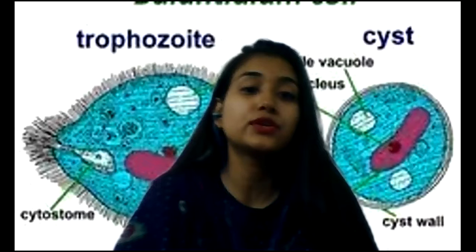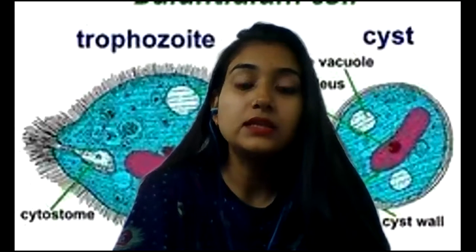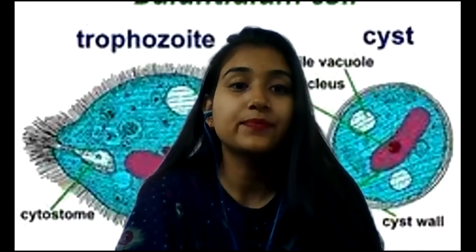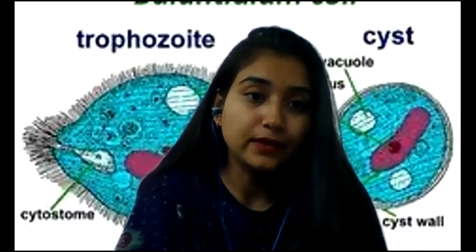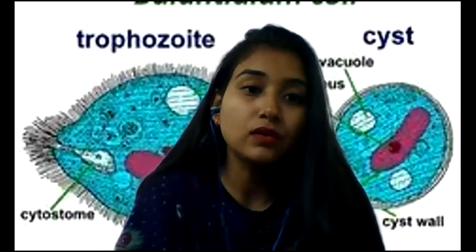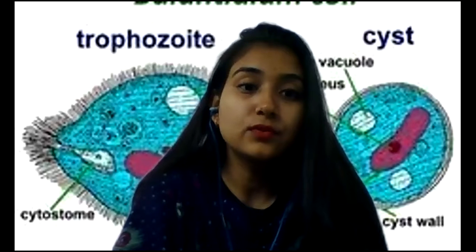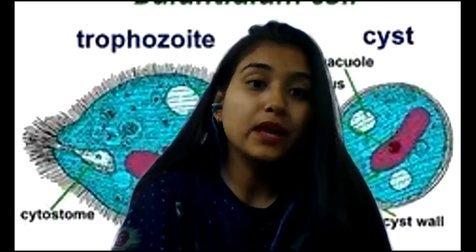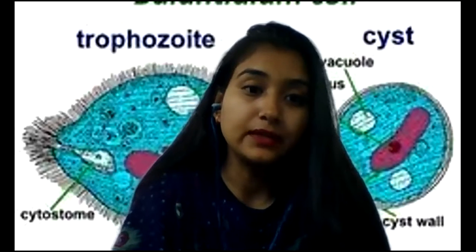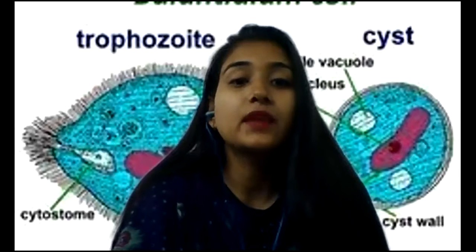Introduction. Balantidium coli is the largest protozoan and the only ciliated parasite of humans. It causes balantidiasis. Its taxonomy belongs to Phylum Ciliophora, Class Litostomatea, Order Vestibuliferida, and Family Balantidiidae. Habitat: the large intestine of man, pig, and other animals.